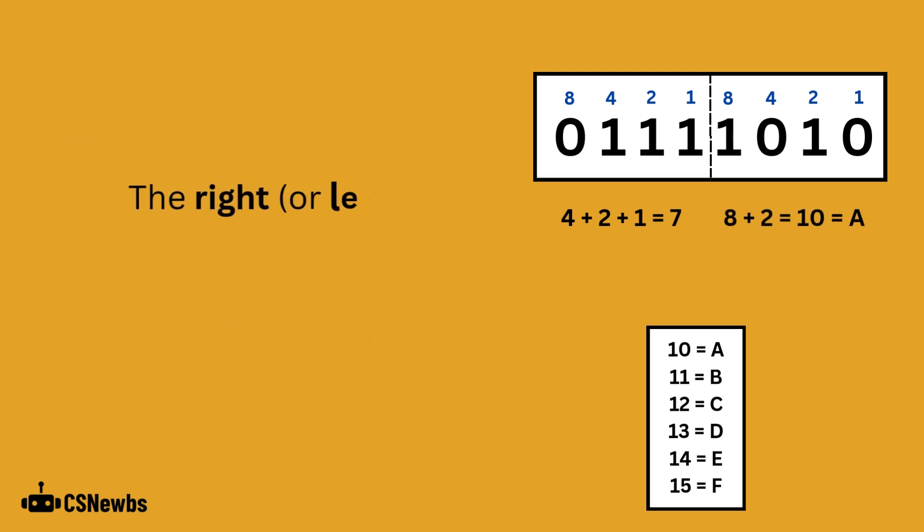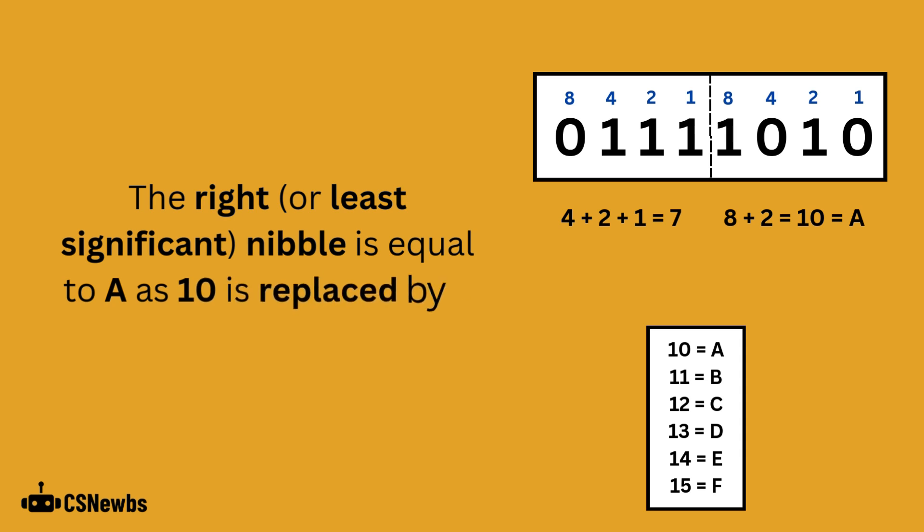The right or least significant nibble is equal to A. 8 plus 2 is 10 and 10 is replaced by A.